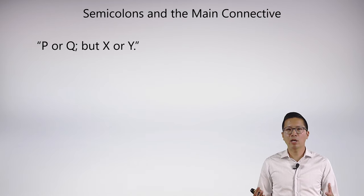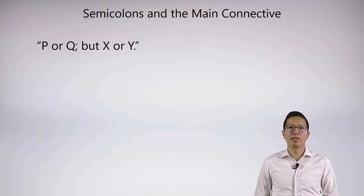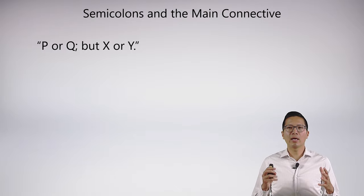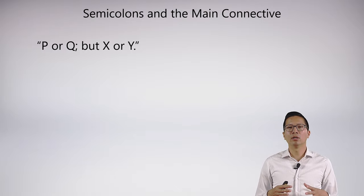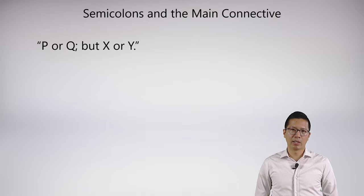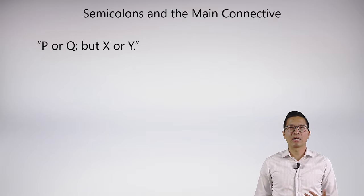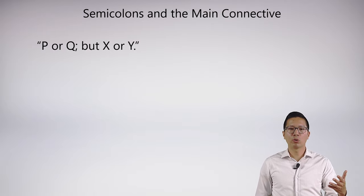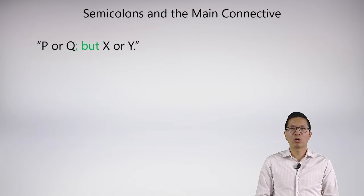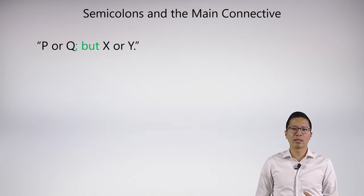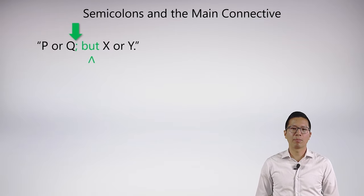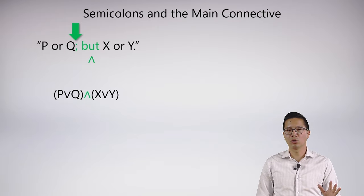One thing in English that can help clarify ambiguity is the semicolon, which we haven't really talked about in any example prior. But the semicolon essentially acts like an indicator that this connective is the dominant — the main — connective. And normally the main connective associated with a semicolon is a conjunction. So here I have 'P or Q; but X or Y.' That semicolon conjunction is going to be the main connective, and we can just symbolize this very straightforwardly. We just get '(P or Q) and (X or Y),' and there's no ambiguity.